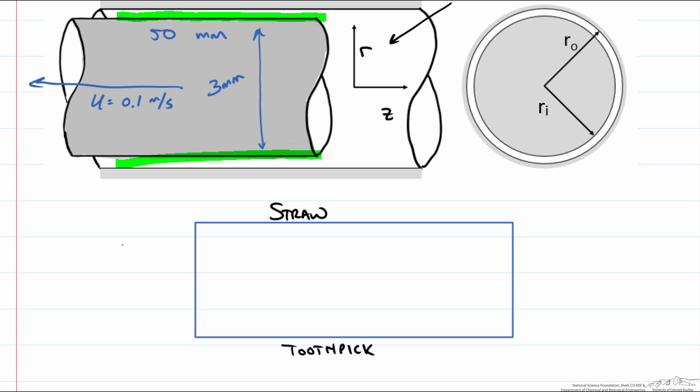We are assuming that the velocity profile is linear. So if we were to draw this we know that the velocity at the straw is going to be 0 since the straw is not moving. The toothpick is so our maximum velocity is going to be at the toothpick surface.